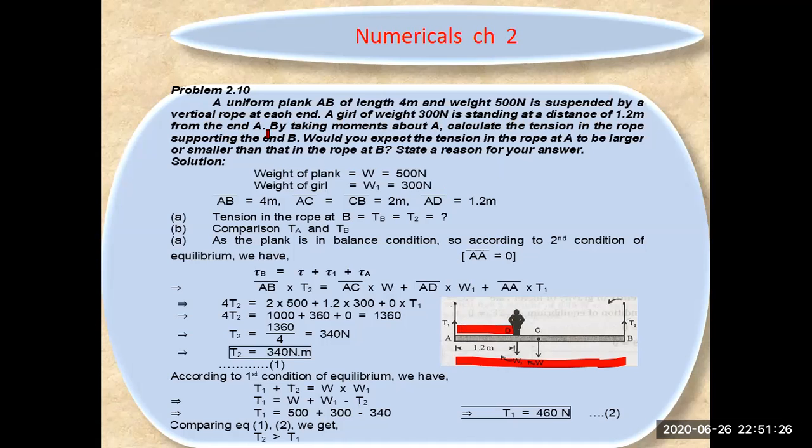By taking the moment about point A, calculate the tension in the rope supporting end B. Would you expect the tension in rope A to be larger or smaller than that in rope B? Give the reason for your answer.